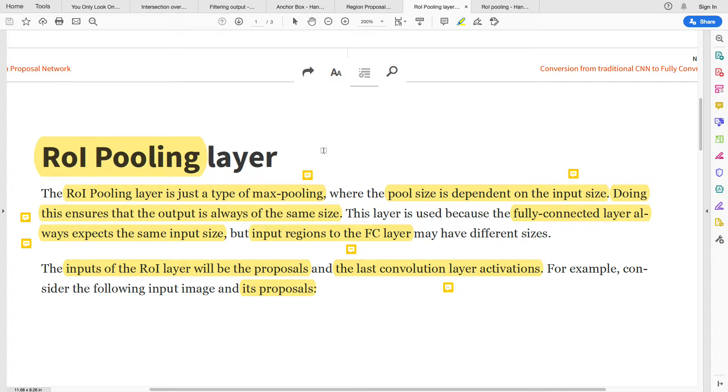Essentially the pooling reduces the size of your feature map. The ROI pooling layer is just a type of max pooling that you have in convolutional neural network, but in this case the pool size is dependent on the input size.